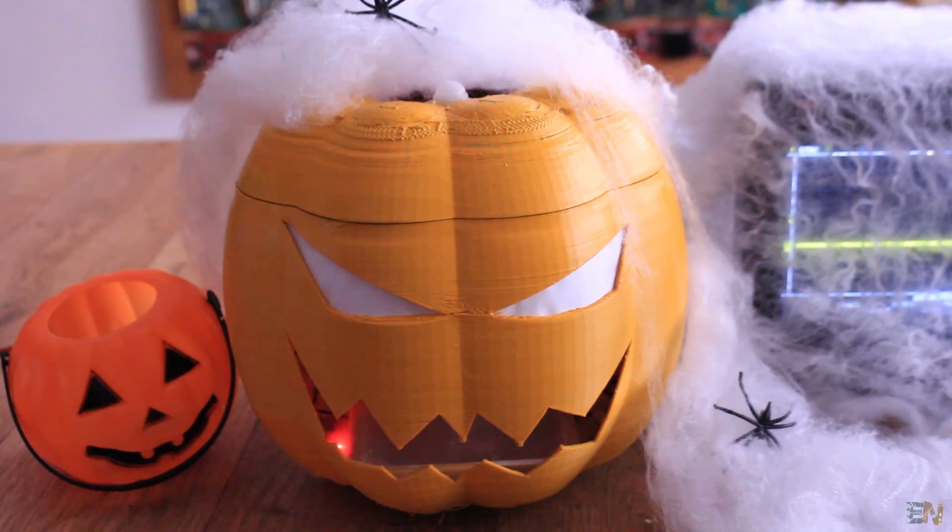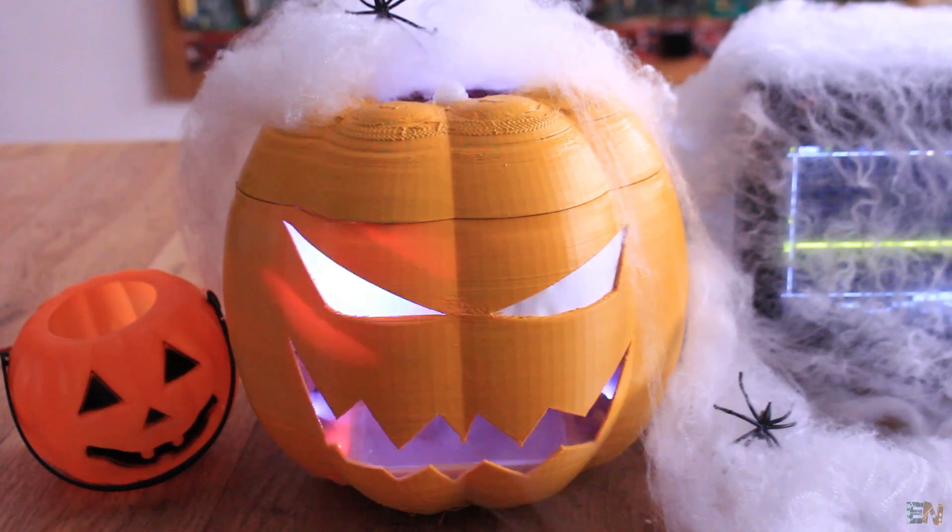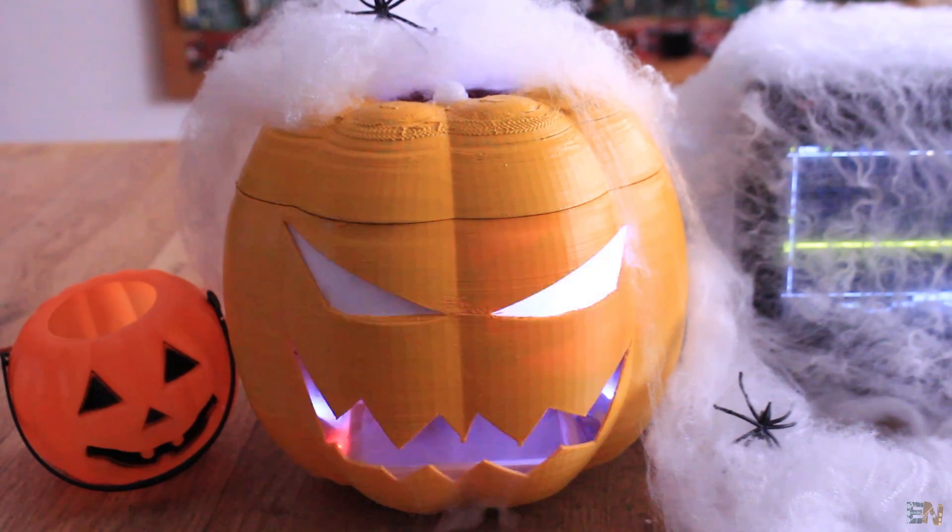The scary pumpkin will stay powered off till it detects movement. Once it detects that somebody is close, it will run a few random loops and play some scary sounds, also changing the lights' colors and blinking.